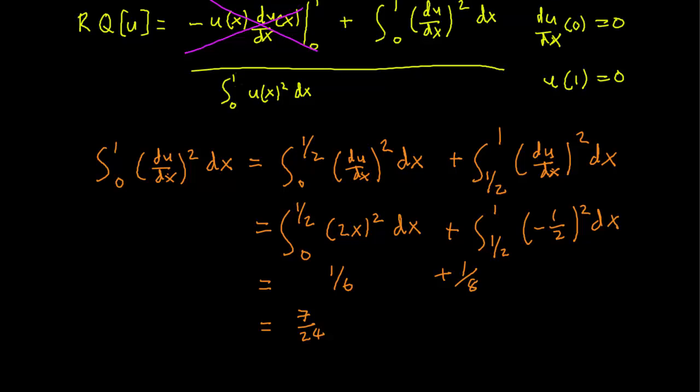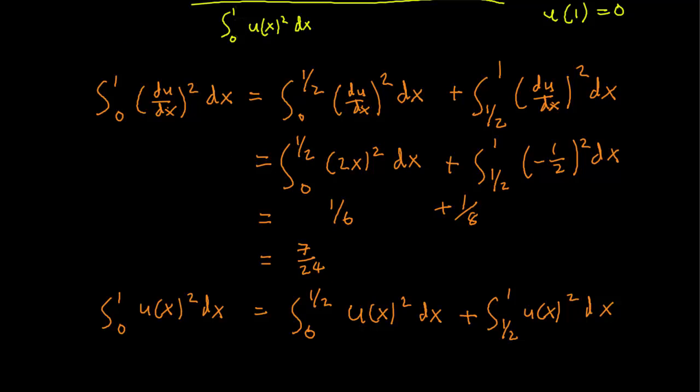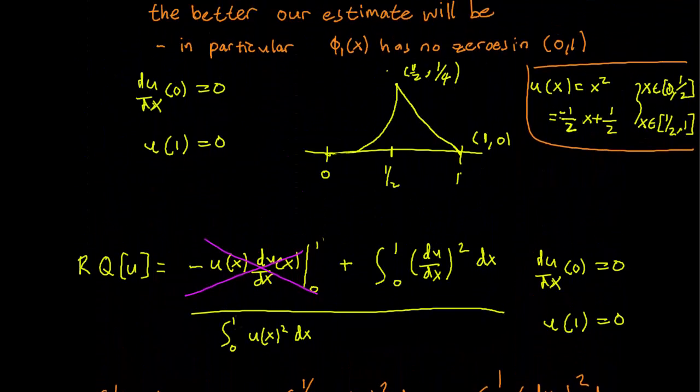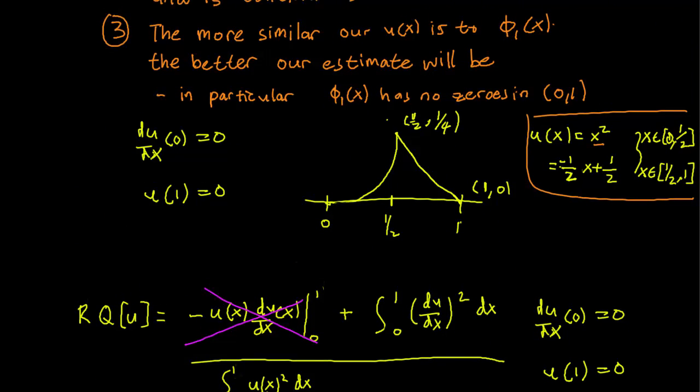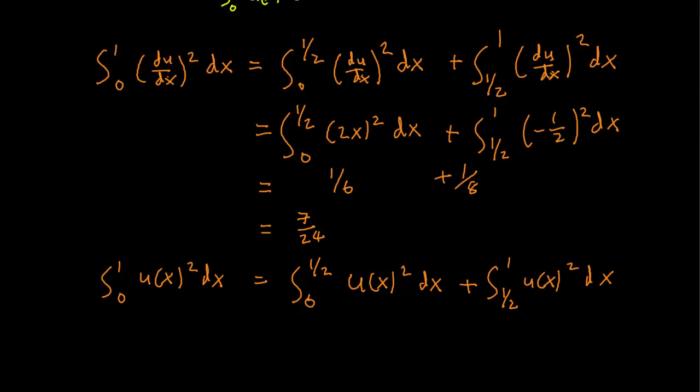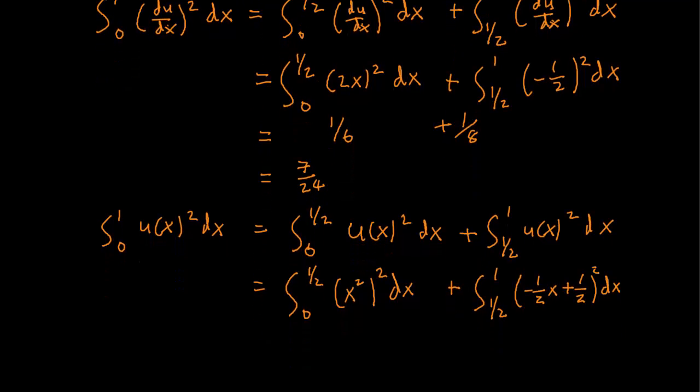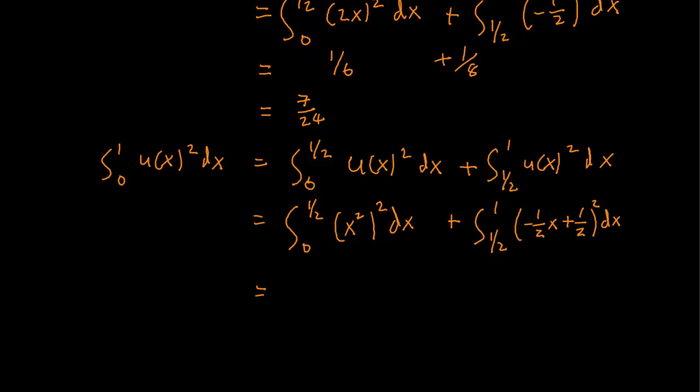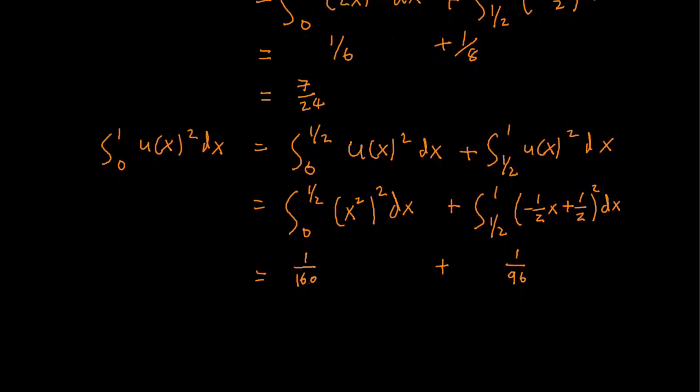For the denominator, we do the same thing. We split the function into [0, 1/2] and [1/2, 1] since the function is defined differently in both intervals. In the first interval we have x², in the second interval we have that line. This is going to be (x²)²dx from 0 to 1/2 and (-1/2x + 1/2)²dx from 1/2 to 1. Both of these are very elementary integrals to compute. We get 1/160 and 1/96. When we add those together, we get 1/60.